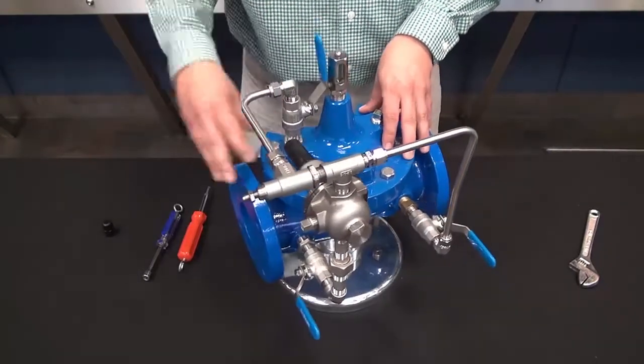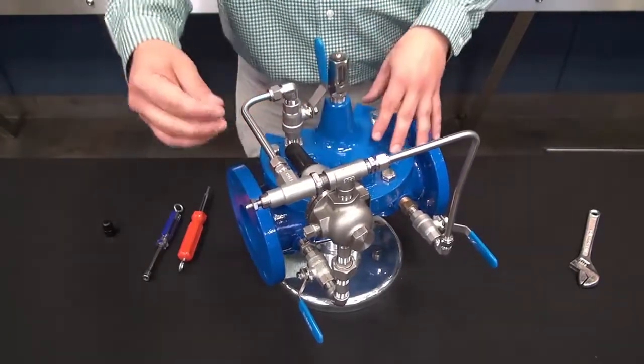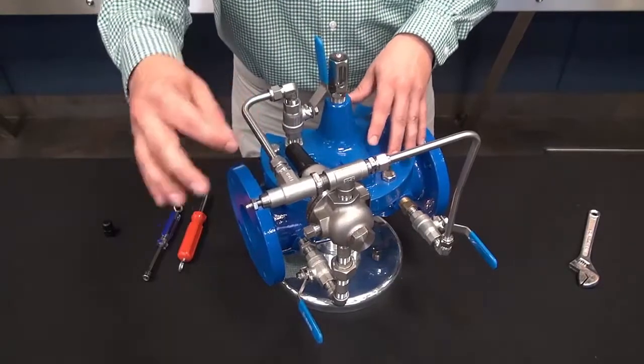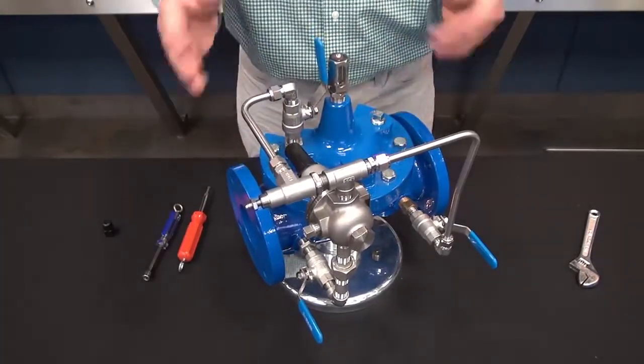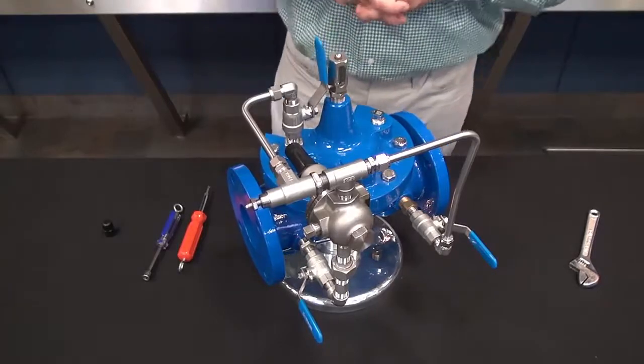Now this one here is an opening speed control. There is no pressure range or speed range that is given to a CV. Again it's based on the characteristics of your system.